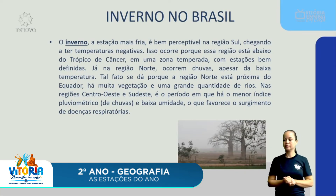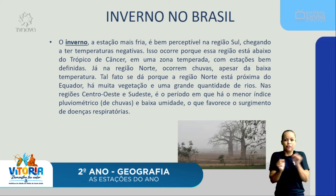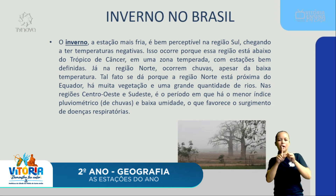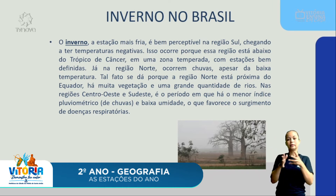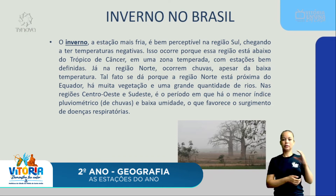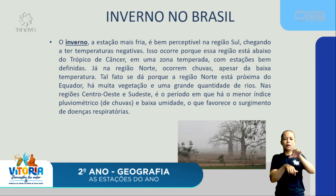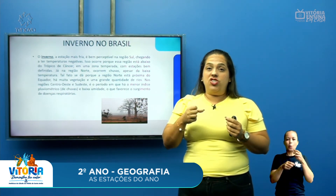No inverno do Brasil, é a estação mais fria do ano. É bem perceptível na região sul, onde as temperaturas chegam a ficar negativas, porque essa região está abaixo do Trópico de Câncer, em uma zona temperada com estações bem definidas. Já na região norte ocorrem chuvas apesar da baixa temperatura, porque está mais próxima da linha do Equador e tem muita vegetação e rios. Nas regiões centro-oeste e sudeste, o inverno é o período de menor índice de chuva e baixa umidade, o que favorece o surgimento de doenças respiratórias — muita gente gripada e com alergia.